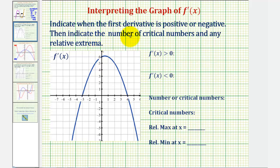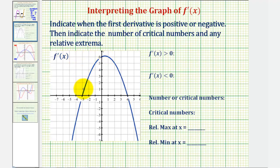We want to indicate when the first derivative is positive or negative, then indicate the number of critical numbers and any relative extrema. Notice how this is the graph of f prime of x, not f of x. So f prime of x is positive when the graph is above the x-axis, which would be over this interval here from negative three to positive four.